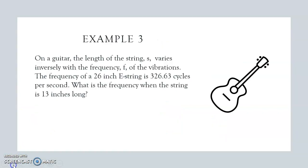Some things in the real world do follow inverse variation. On a guitar, the length of the string s varies inversely with the frequency of the vibrations. The frequency of a 26-inch E string is 326.63 cycles per second. What is the frequency when the string is 13 inches long?